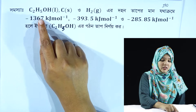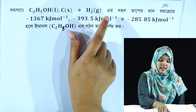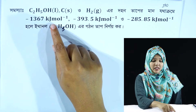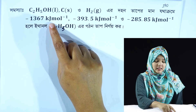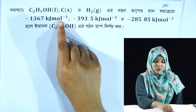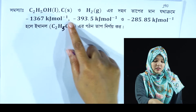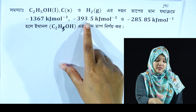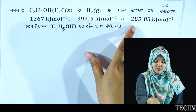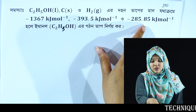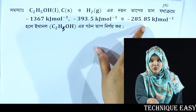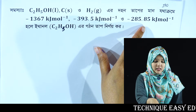Here we have ethanol, carbon and hydrogen. The given enthalpy values are: minus 1367 kJ per mole, minus 393.5 kJ per mole, and minus 285.85 kJ per mole.